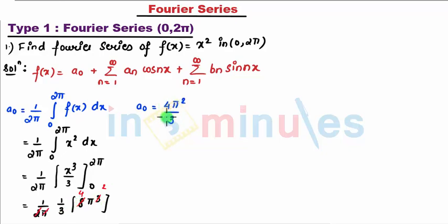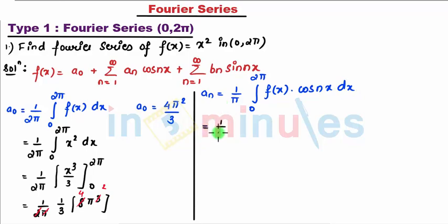In the similar way I'll be finding value of aₙ. So my aₙ is 1 upon π, integral 0 to 2π, f(x) is x² into cos(nx)dx. So that comes to be 1 upon π, integral 0 to 2π, my f(x) is x² into cos(nx)dx.